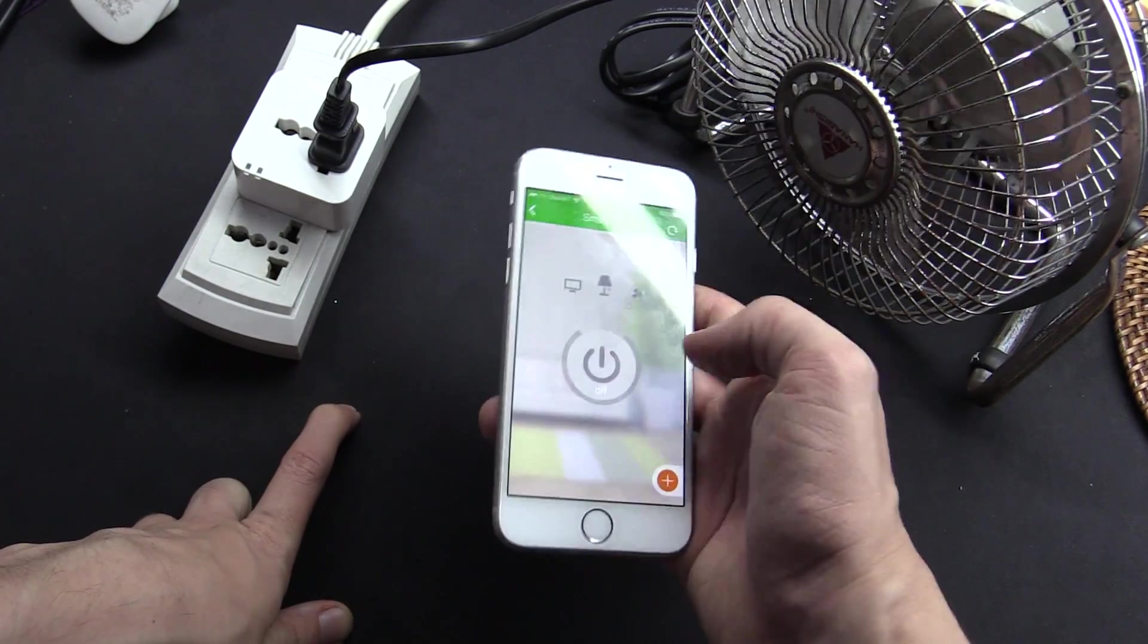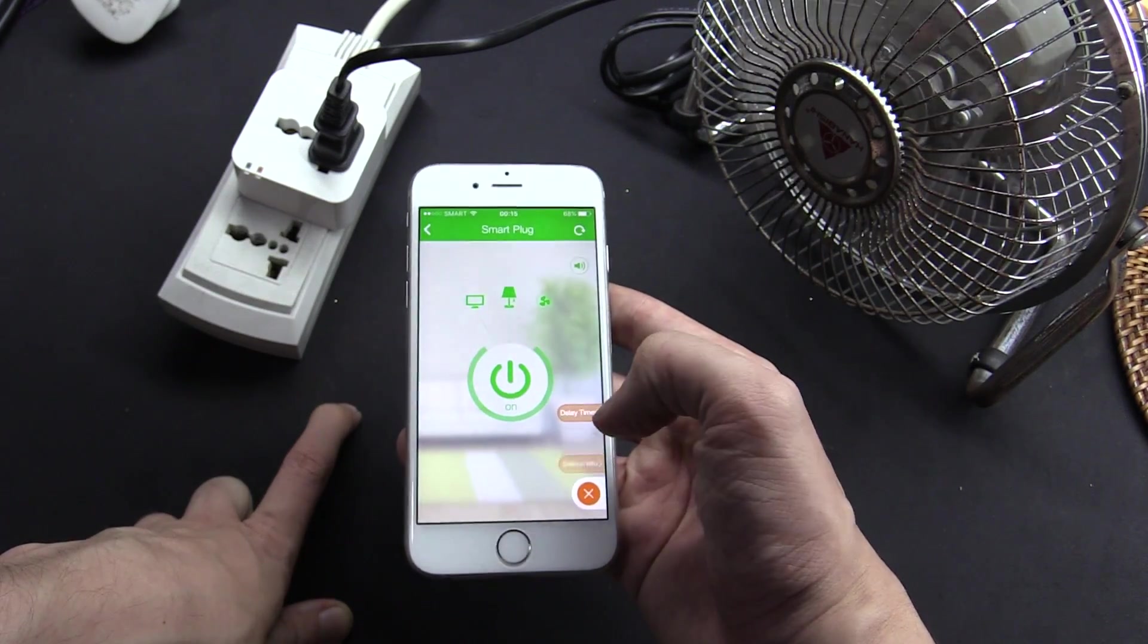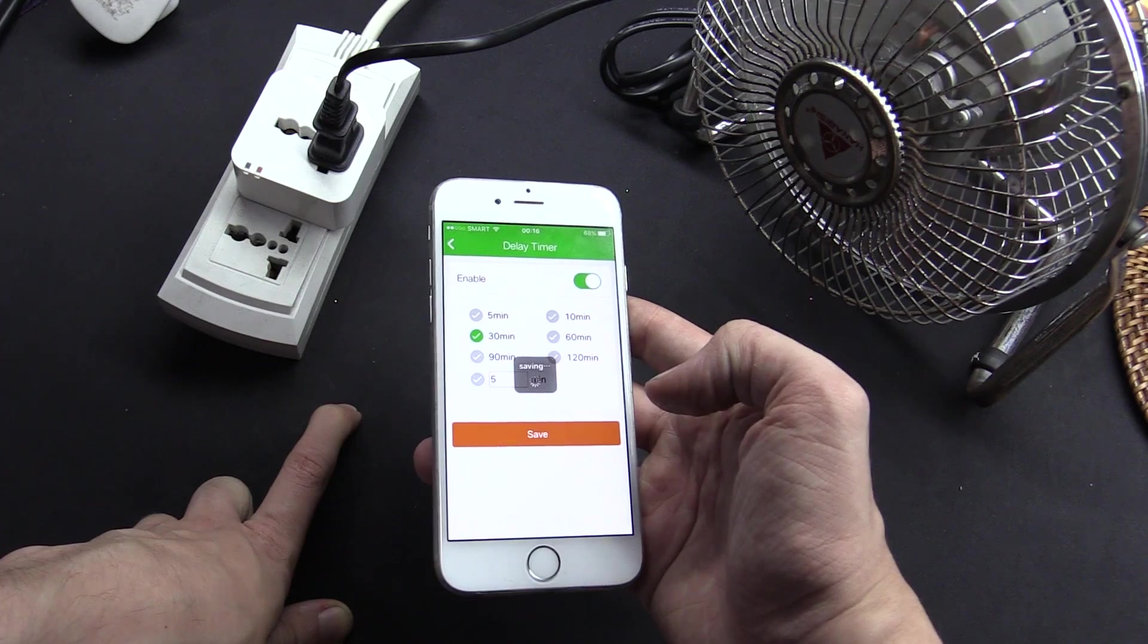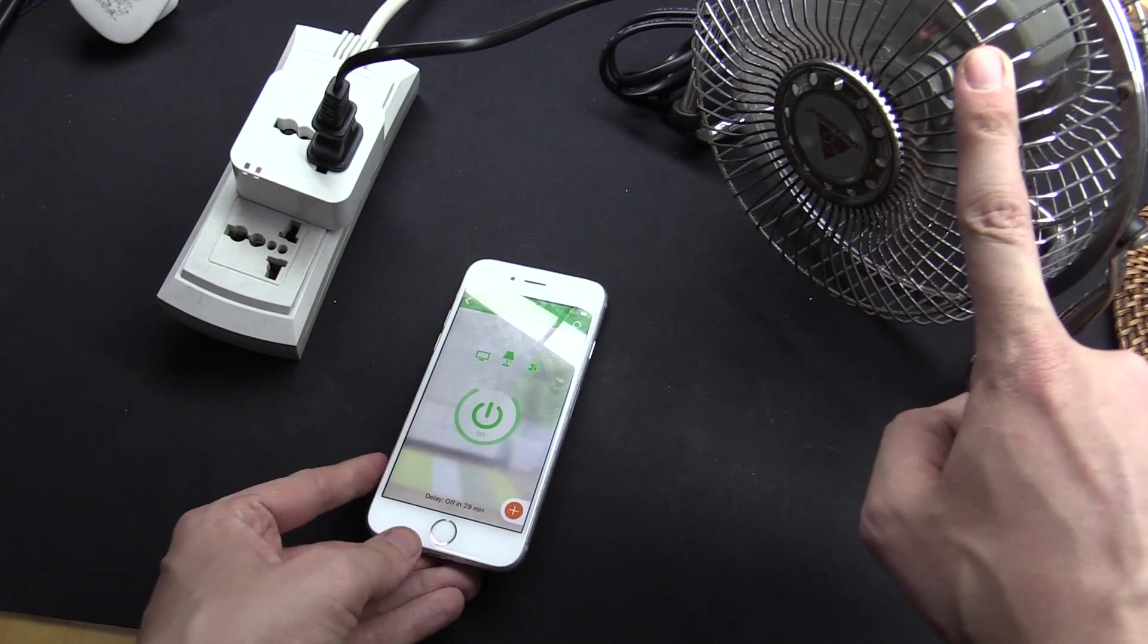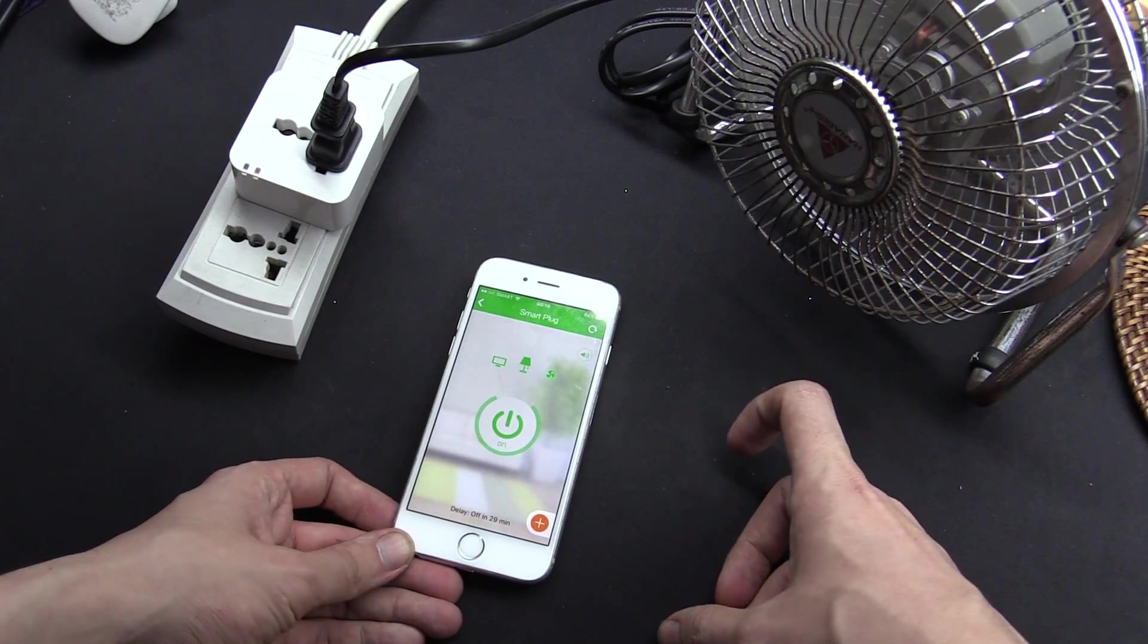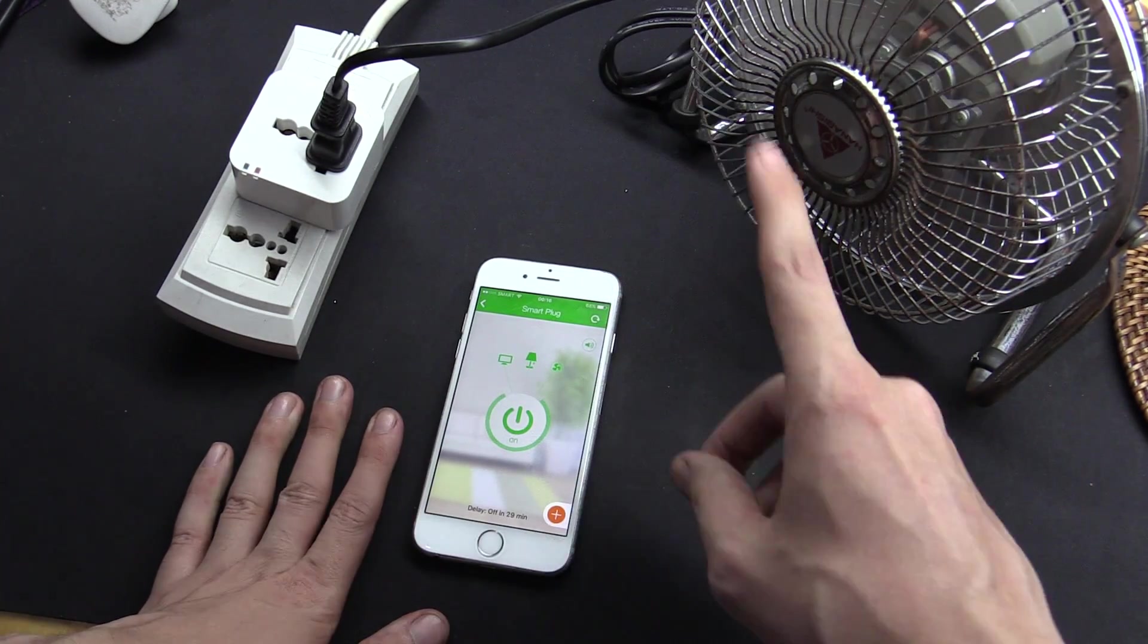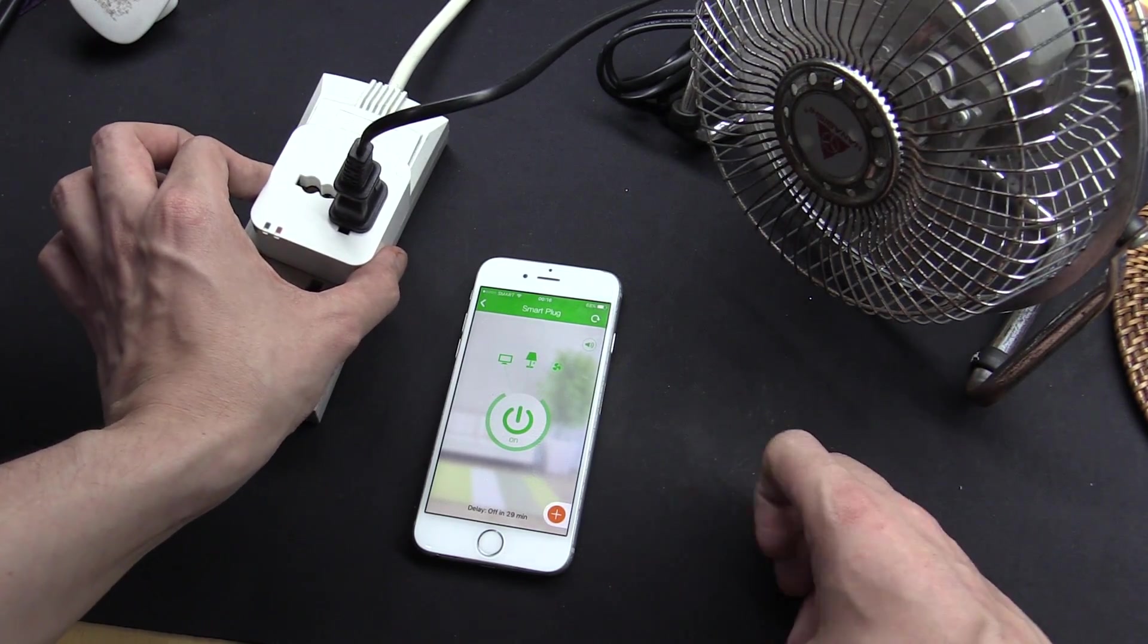Now, aside from being able to turn a load on and off, I could turn this on, and then I could set a delay timer. So I could set this for, say, 30 minutes, and then save that. And what that means is in 30 minutes or 29 minutes, this is going to automatically turn off. And the great thing about this is that you can completely turn off your cell phone, and it will still turn off in 30 minutes. Because once it's sent the command to this box here, that's it. It's stored in here, and this will remember.